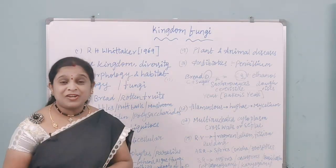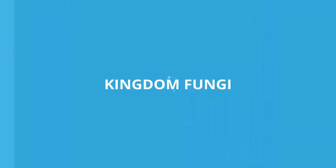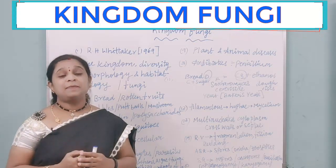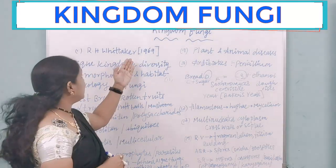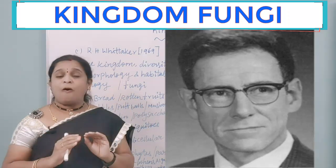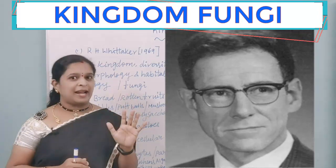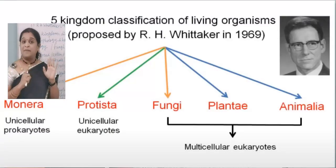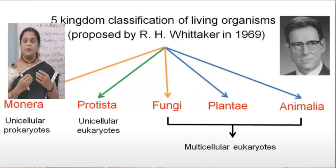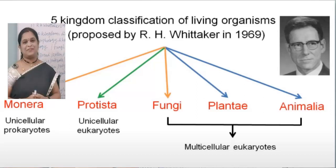Happy morning to everyone, welcome to my channel Biotech Info. Today we are going to discuss the characteristic features of the kingdom Fungi. Previously we have come across that R.H. Whittaker in 1969 proposed a five kingdom classification, separating all living organisms into five categories: Monera, Protista, Fungi, Plantae, and Animalia. Today we are going to know about the unique characteristic features of the kingdom Fungi.